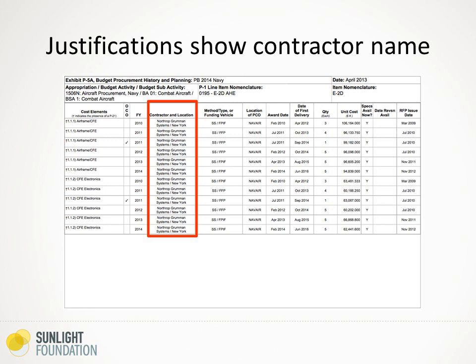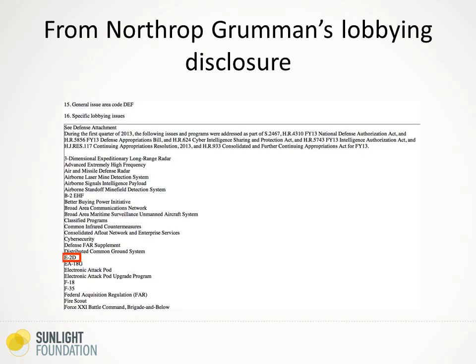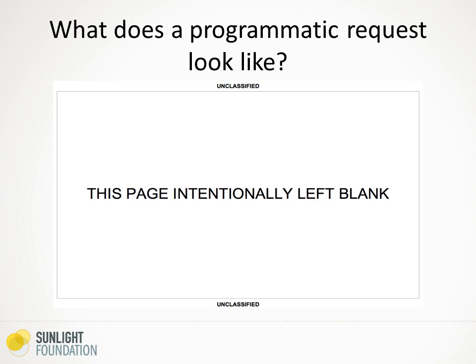Unfortunately, all of this information is in forms that aren't easily searchable — some of them are image files, some you can search, but you can't search all of it because some pages are images and some are text. The only way to really deal with this is to go through it page by page and find the different companies. These budget justification books are in some cases thousands of pages long. But it's interesting to note: here's a page from Northrop Grumman's lobbying disclosure at the same time that budget document came out, and you can see one of the things they're lobbying on is the E-2D aircraft. These are all federal programs on that lobbying form.